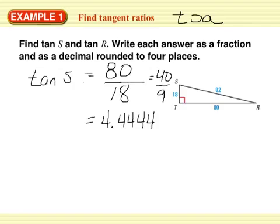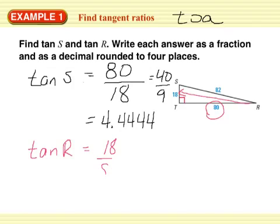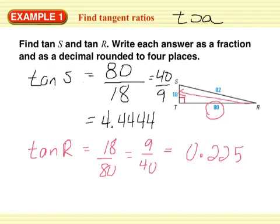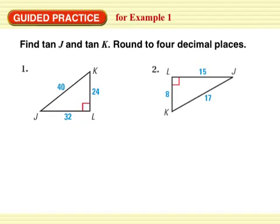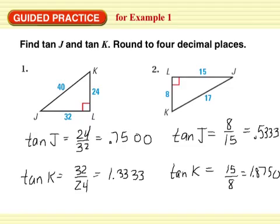Now let's do the tangent of R. If I look at R, I'm doing opposite over adjacent: 18 over 80, which simplifies to 9 over 40, which equals 0.2250 to four decimal places. Now you try: find tan J and tan K, rounded to four decimal places for both problems.